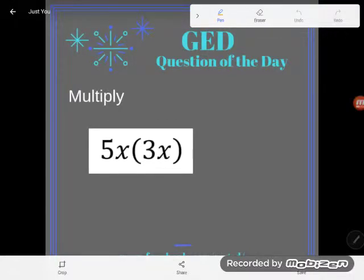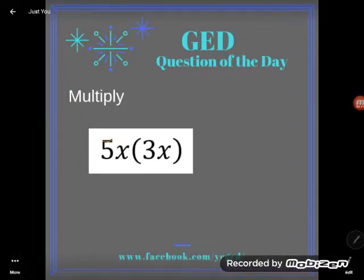Hey guys, it's GED question of the day time and we've been asked to multiply. Take a look down here. You're gonna see that I have the expression, not equation because I have no equal sign, 5x times 3x.